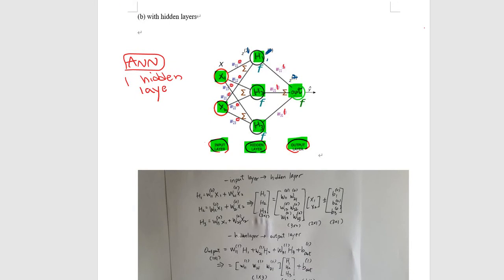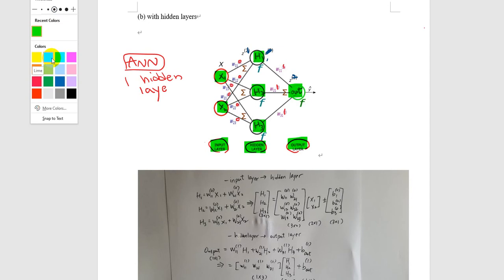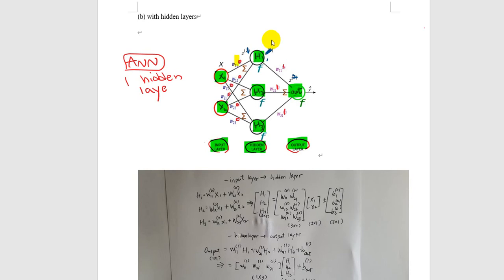We're going to introduce a couple of notations. If you see here, we have zero under superscript for weights, which means that all your arrows coming from zero stage, which is the input stage. All these arrows are coming from the input layer, which is indicated by zero.